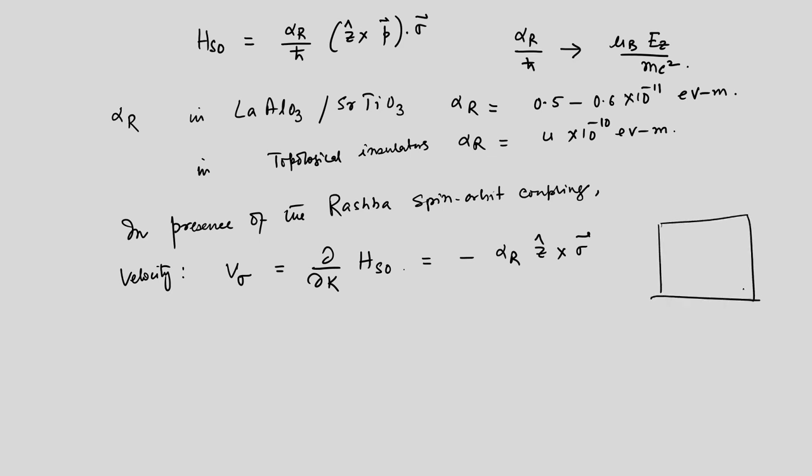This separation creates a spin current — spin-polarized current where up-spin and down-spin are spatially segregated — and gives rise to a spin Hall voltage perpendicular to the current direction. If the magnitude of this spin Hall voltage is considerable it can contribute to spintronic device applications.